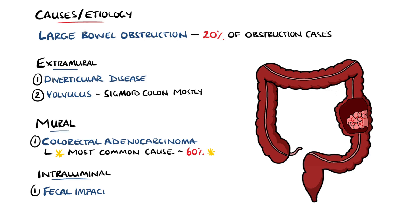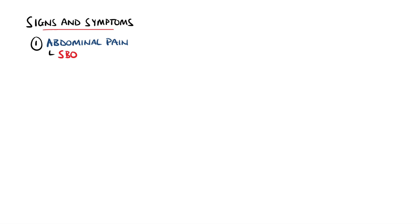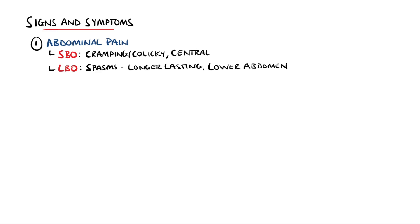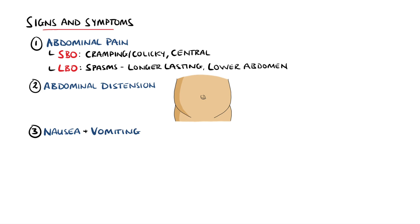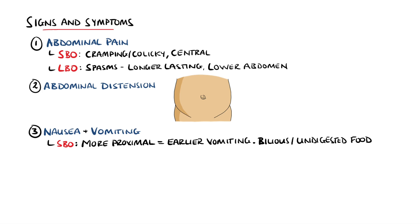An intraluminal cause of large bowel obstruction could be fecal impaction. Patients with intestinal obstruction will typically manifest abdominal pain, which in small bowel obstruction is usually a cramping or colicky pain in the centre of the abdomen due to peristalsis working against the obstruction. In large bowel obstructions, the spasms typically last longer or are continuous and are felt lower in the abdomen. This pain is often accompanied by abdominal distension. Vomiting is also likely, with proximal obstructions suffering vomiting earlier than more distal obstructions, and small bowel obstructions are more likely to produce bilious material or undigested food contents, while in large bowel obstructions, vomiting may be feculent.